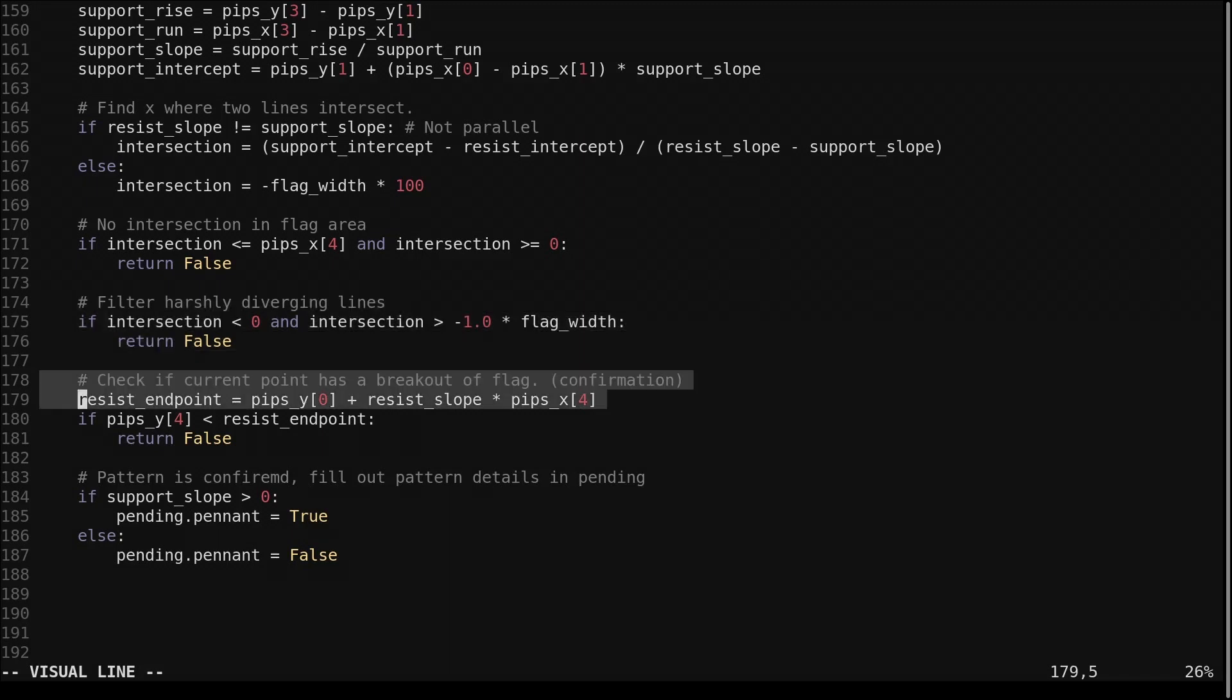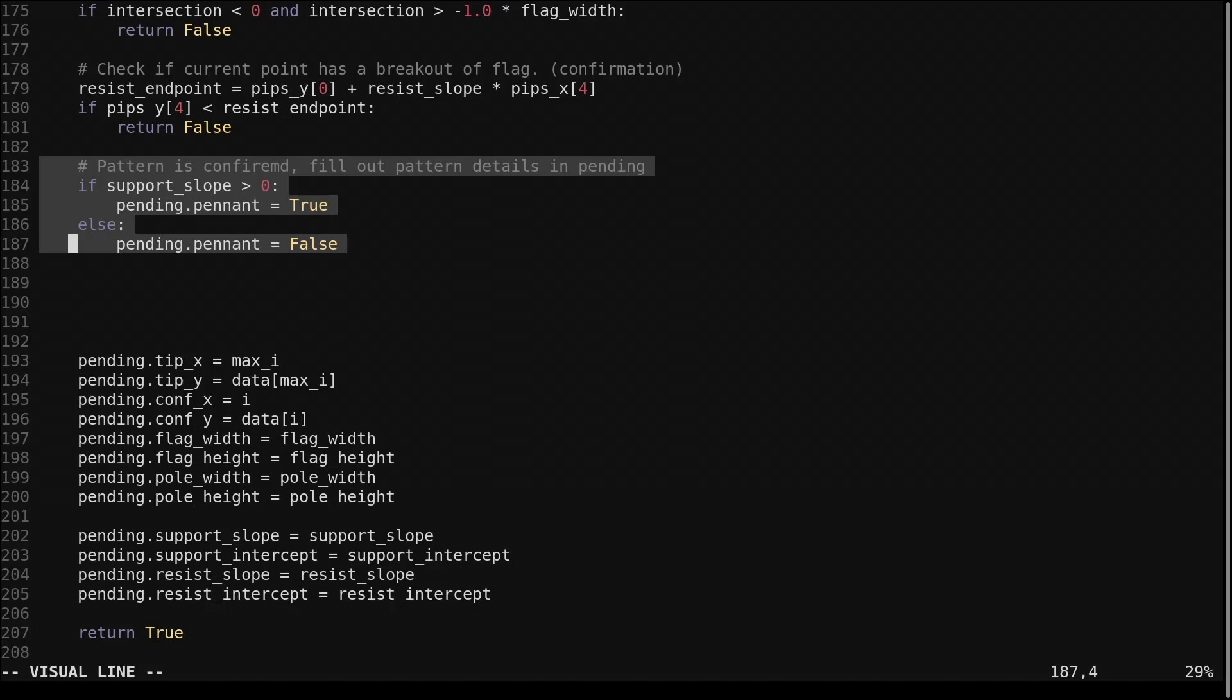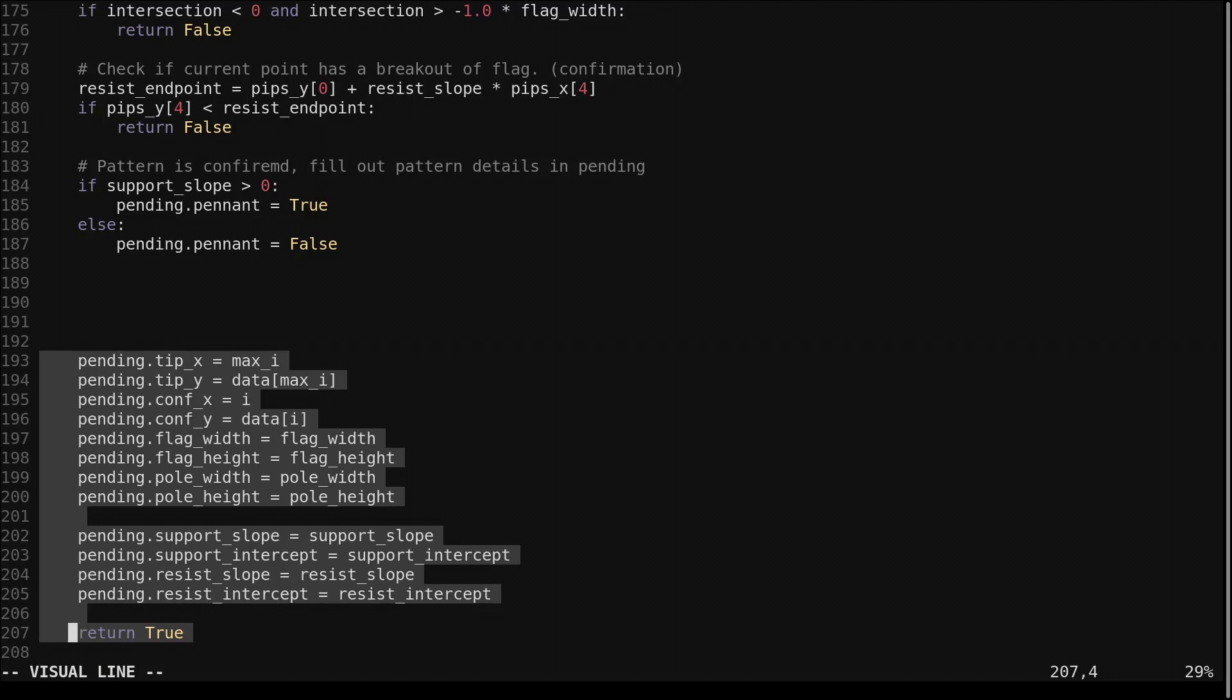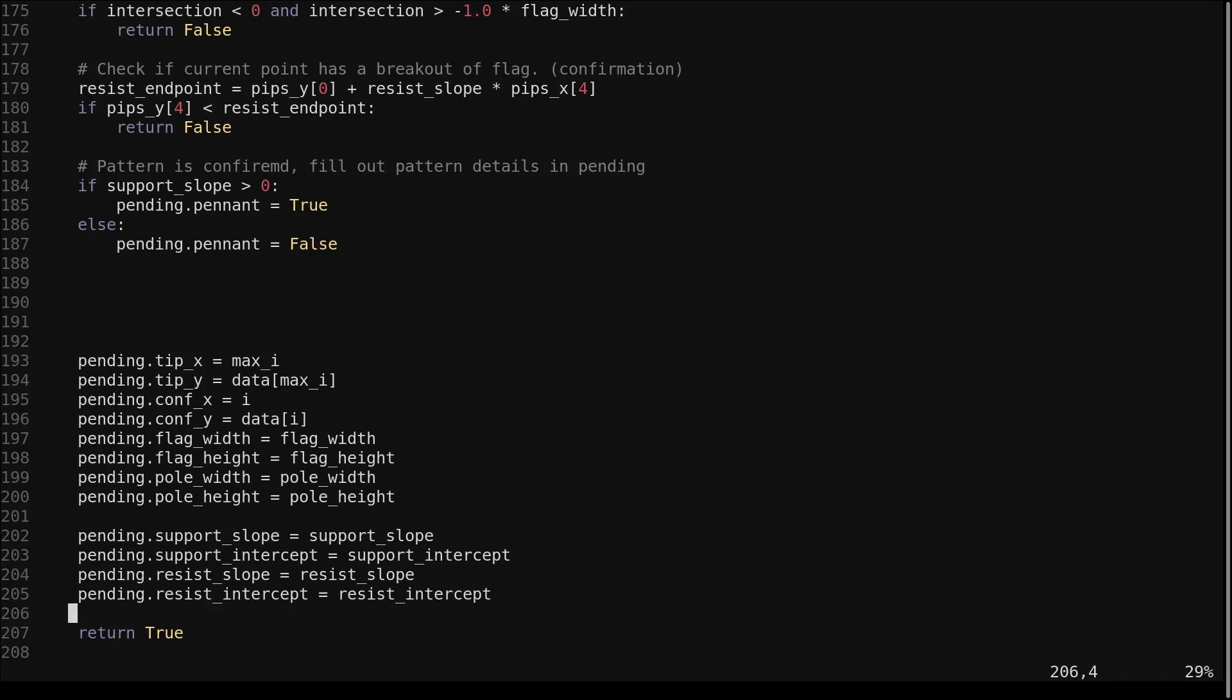Finally, we compute the value of the upper flag line at the current point. We check to see if the current price has broken out. At this point, the pattern is confirmed. We check the lower flag line slope to decide if it's a pennant or not. We fill out all the details in the pending pattern and return true. I won't walk through the code for checking bear patterns. It is nearly identical, but the rules are symmetrically flipped to align with bear patterns. The full code is available in the description, so you can take a look if you wish.